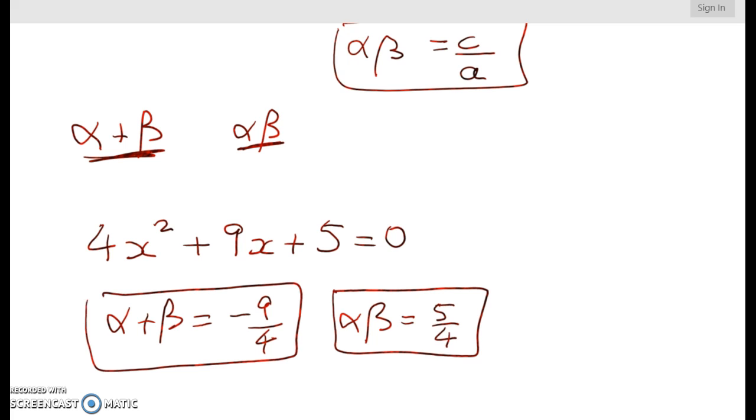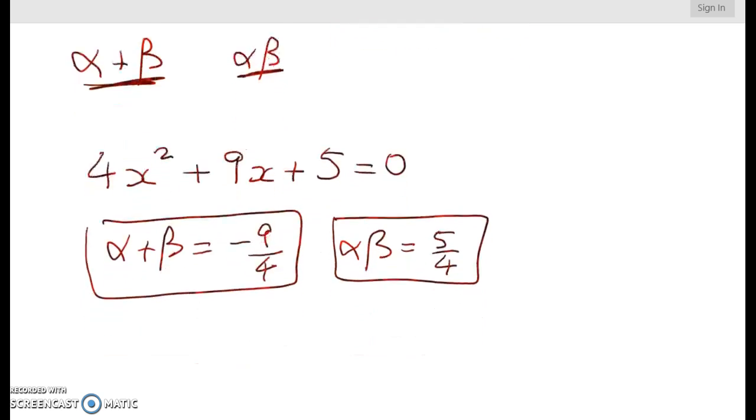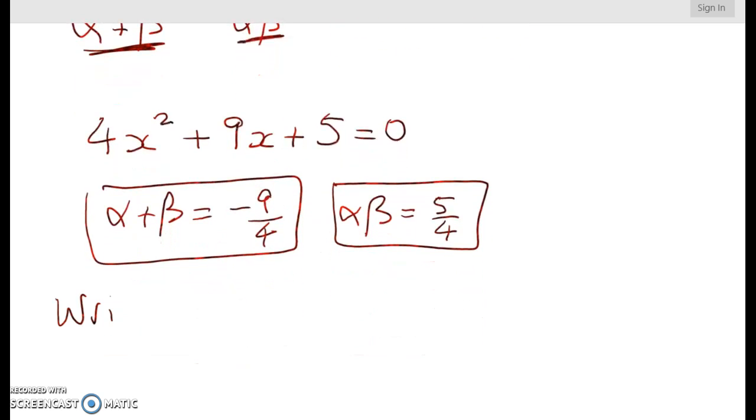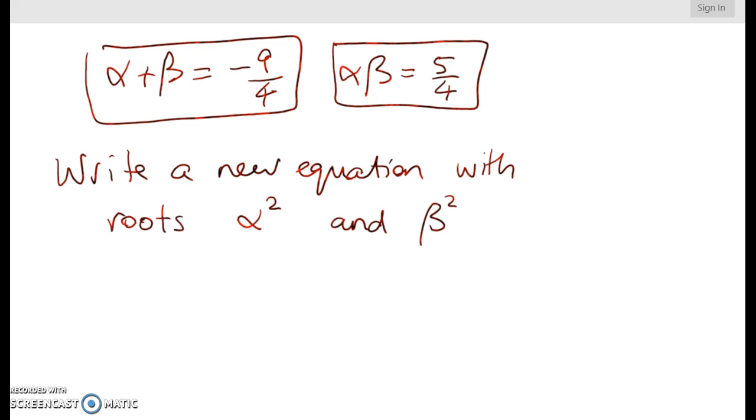Well we know that alpha plus beta is equal to negative 9 over 4, and alpha times beta is equal to 5 over 4. So these are going to be the things that I use from here. Now if we know those, let's see if we can write a new equation with the following roots, alpha squared and beta squared. And we're going to do that without figuring out alpha equals or beta equals.